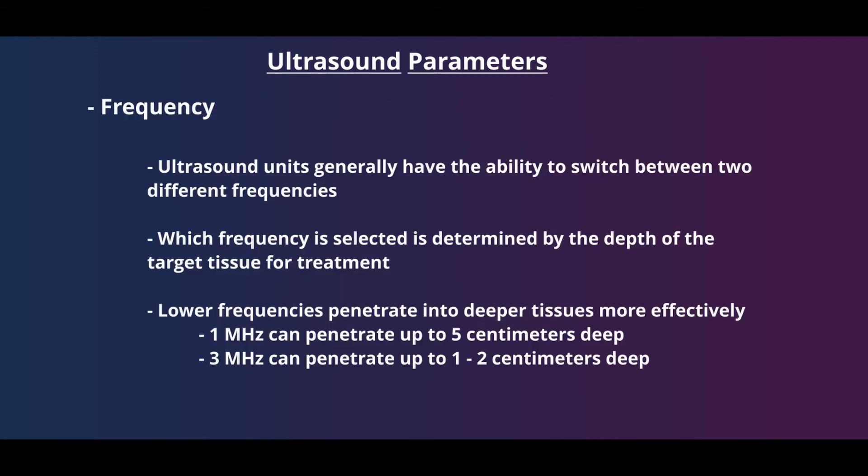First up is frequency. Most ultrasound units have the ability to switch between two different frequencies, usually around 1 megahertz and 3 megahertz. When deciding which to use, you should consider the depth of the target tissue. One megahertz ultrasound has the ability to penetrate deeper, up to 5 centimeters. Ultrasound waves at 3 megahertz will not penetrate as deep, only up to 1 to 2 centimeters. So if you're trying to target deeper tissues, use 1 megahertz; if your tissue is more shallow, you can use 3 megahertz.